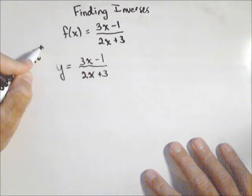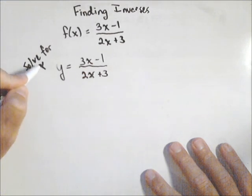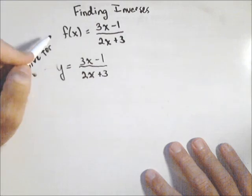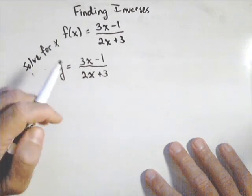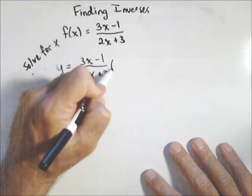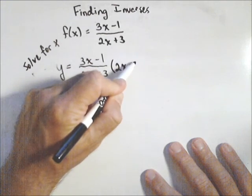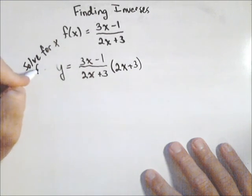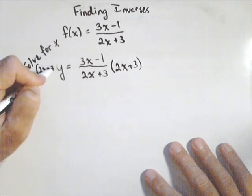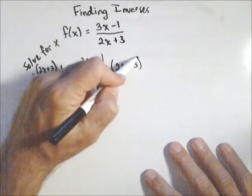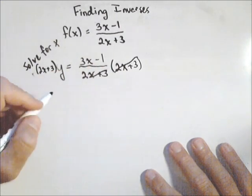We want to solve for x. Anytime you've got a denominator, you want to get rid of it. So I'm going to multiply both sides by (2x+3). That'll cancel this denominator out, so I don't have to deal with it anymore.